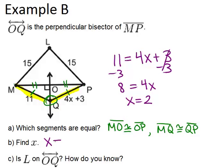So that's our second answer. The third question is, is L on OQ? How do you know? So let's look up at L. So far we haven't looked at this part of the picture. What I notice is that ML is 15, and LP is also 15. So these two segments are also a pair of segments that are equal.